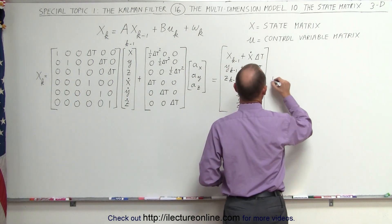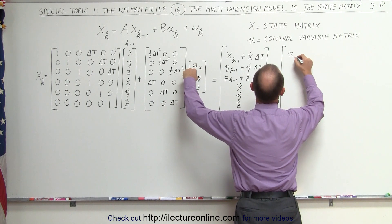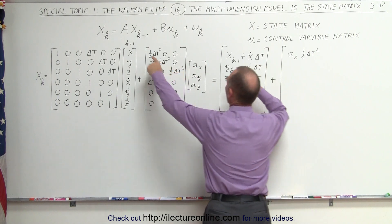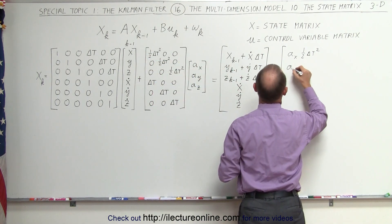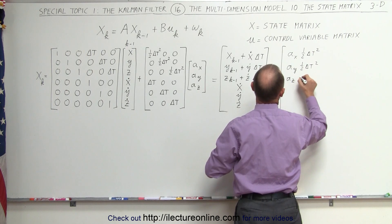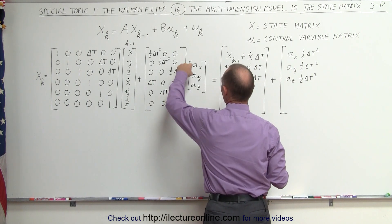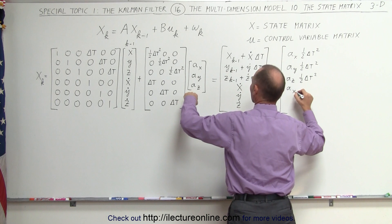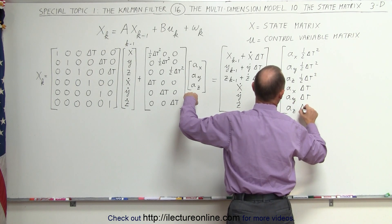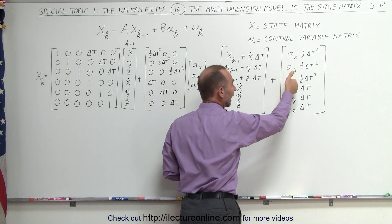From the second multiplication, we get this multiplied times a_x: we get a_x times one-half delta t squared. Then we get a_y times one-half delta t squared, and a_z times one-half delta t squared. The adjustments for velocity come from multiplying by the three control variables: we get a_x times delta t, a_y times delta t, and finally a_z times delta t. This matrix adjusts for acceleration, both in terms of position and in terms of velocity.